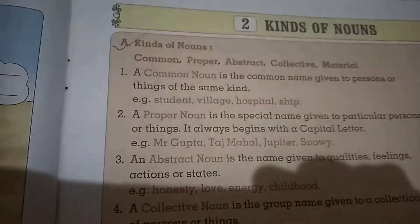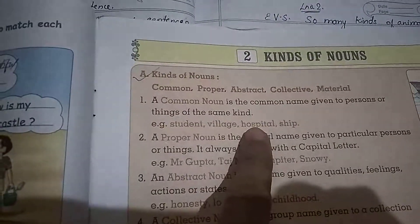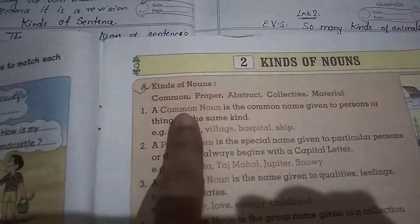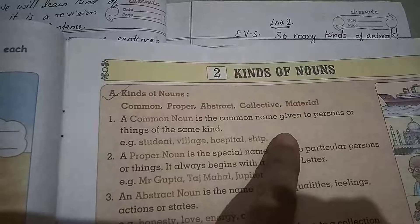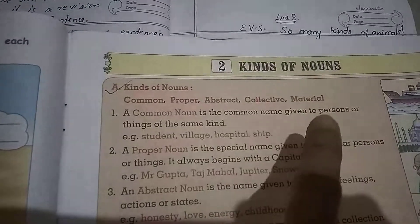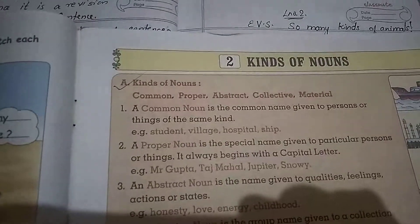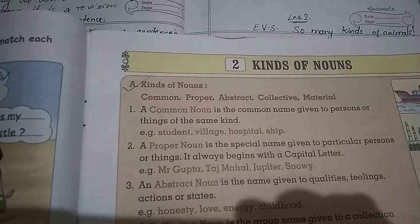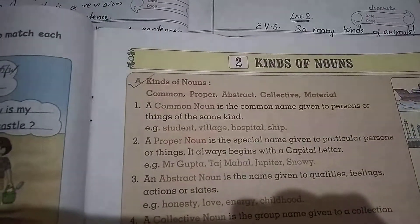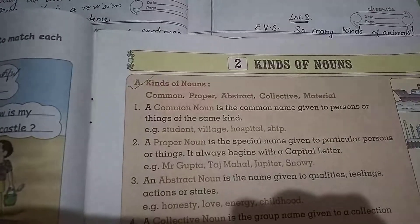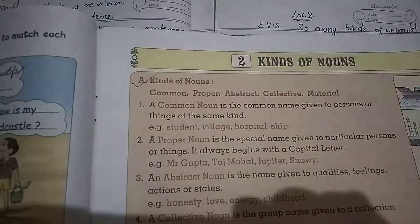There are five types of nouns. One is Common Noun, Proper Noun, Abstract Noun, Collective Noun and Material Noun. I hope you might remember — last year also you were learning these types of nouns. I hope you remember, but we will revise again.